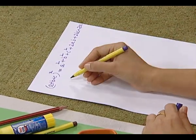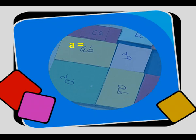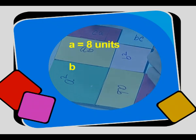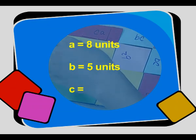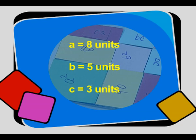Let us verify this identity. For verification, we assume some values of a, b, and c. Conveniently for this activity, we are taking a = 8 units, b = 5 units, and c = 3 units.